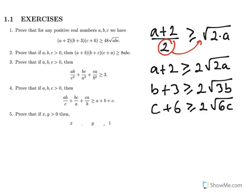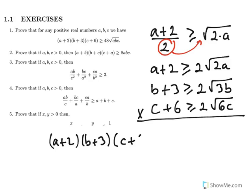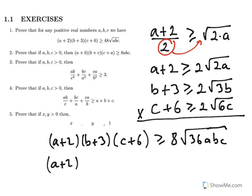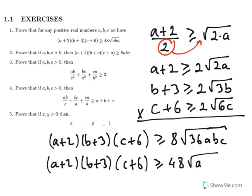Since both sides of these inequalities are positive, we can multiply them side by side. So we get (A+2)(B+3)(C+6) ≥ 2·2·2·√(36ABC) = 8·6·√(ABC) = 48√(ABC), which is the desired result.